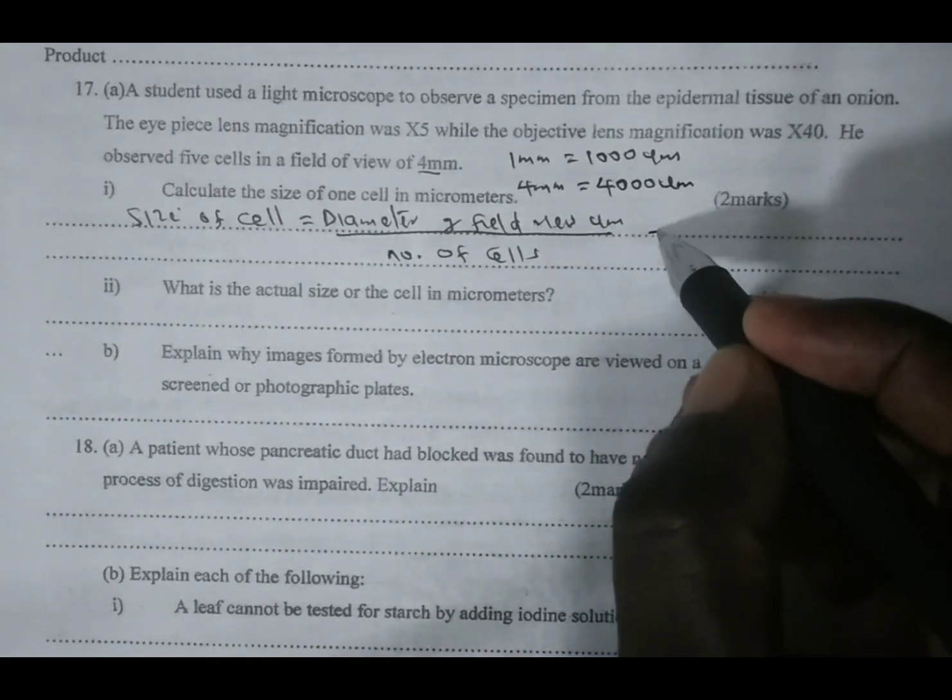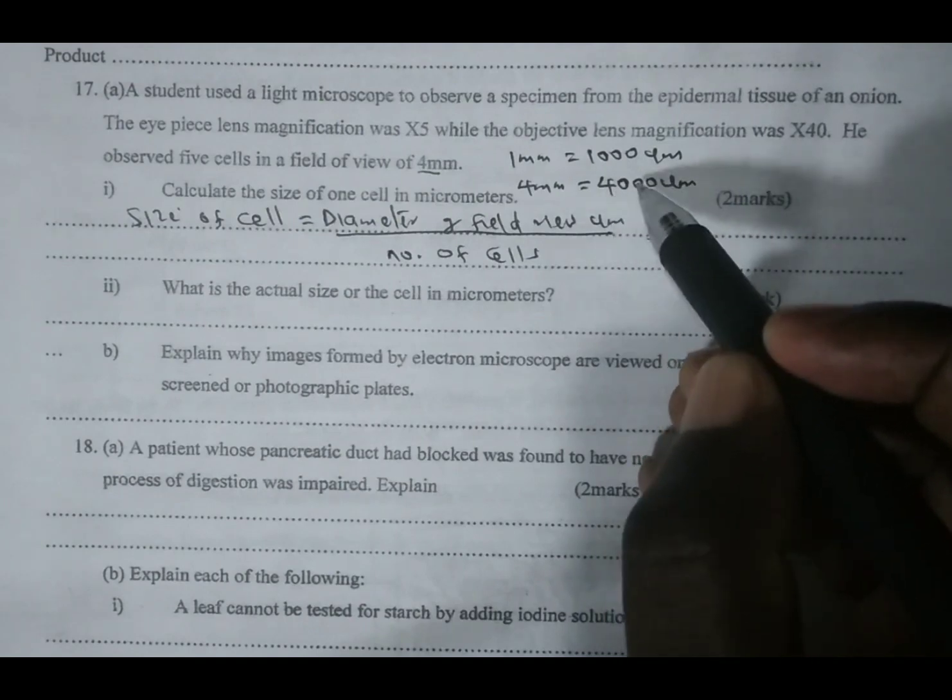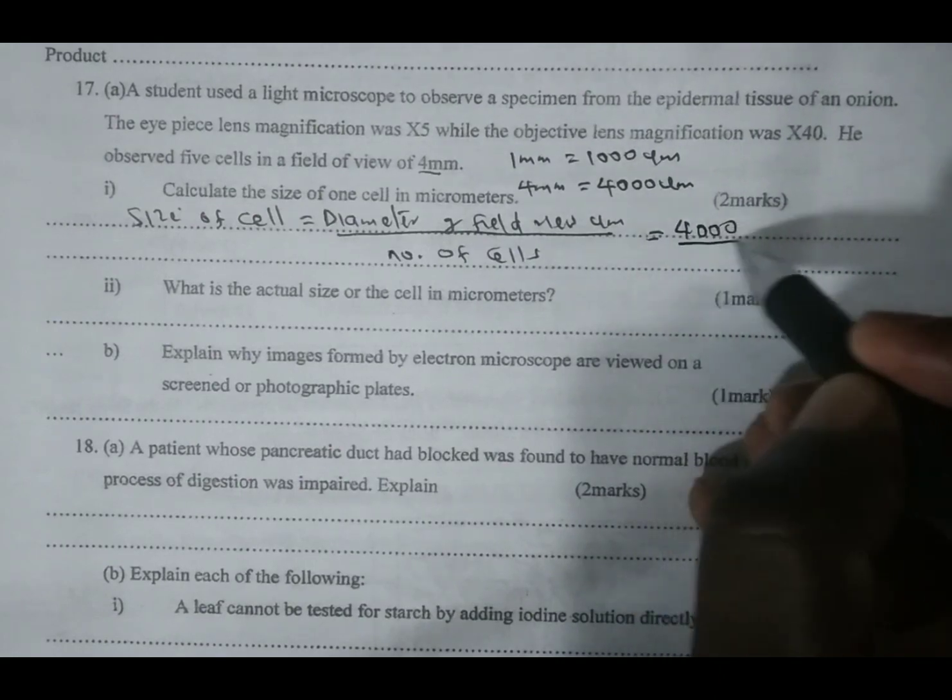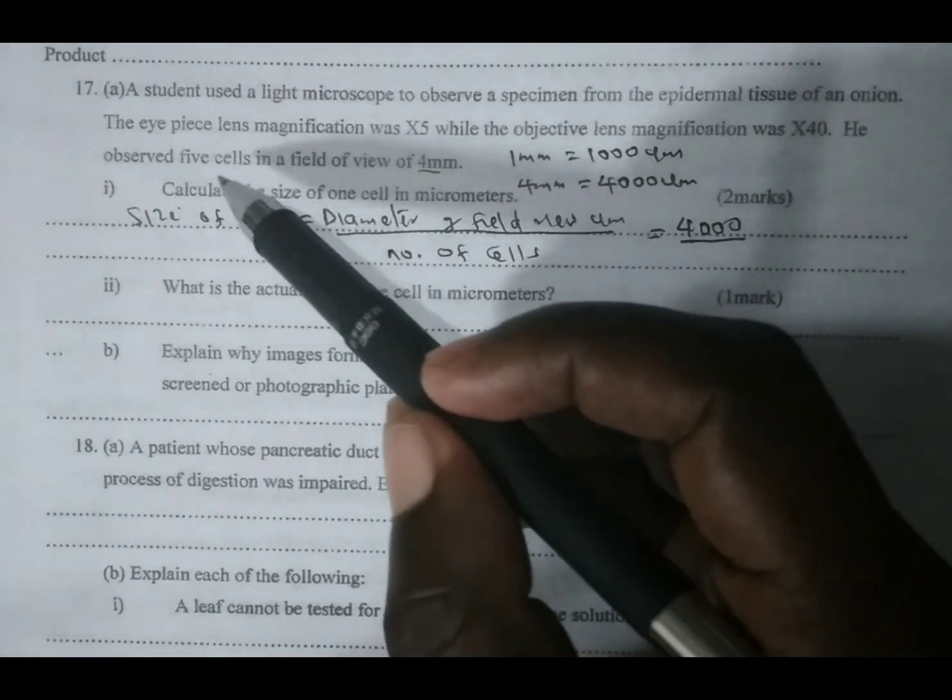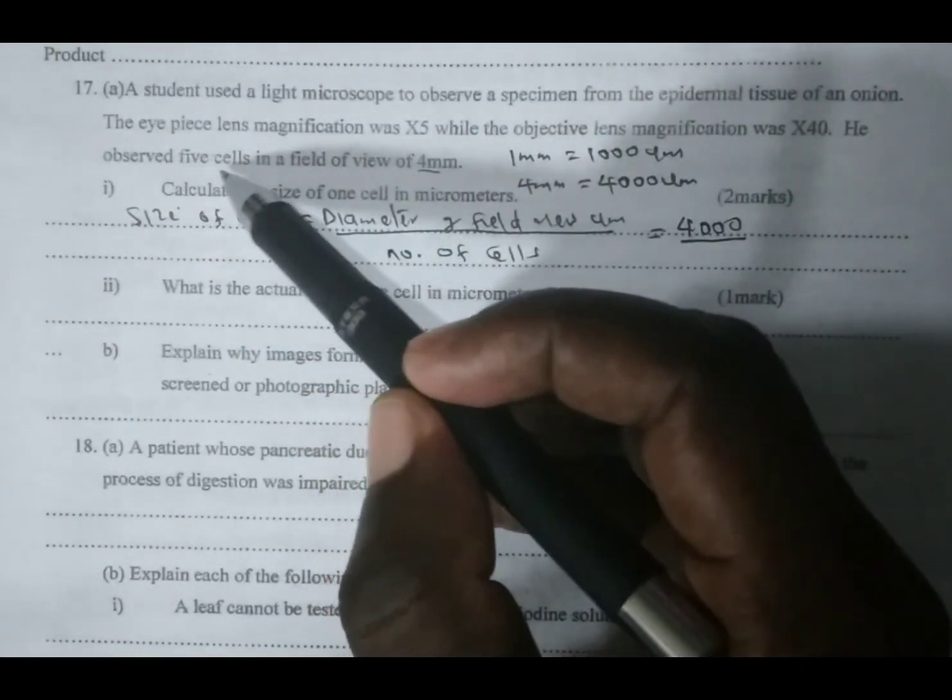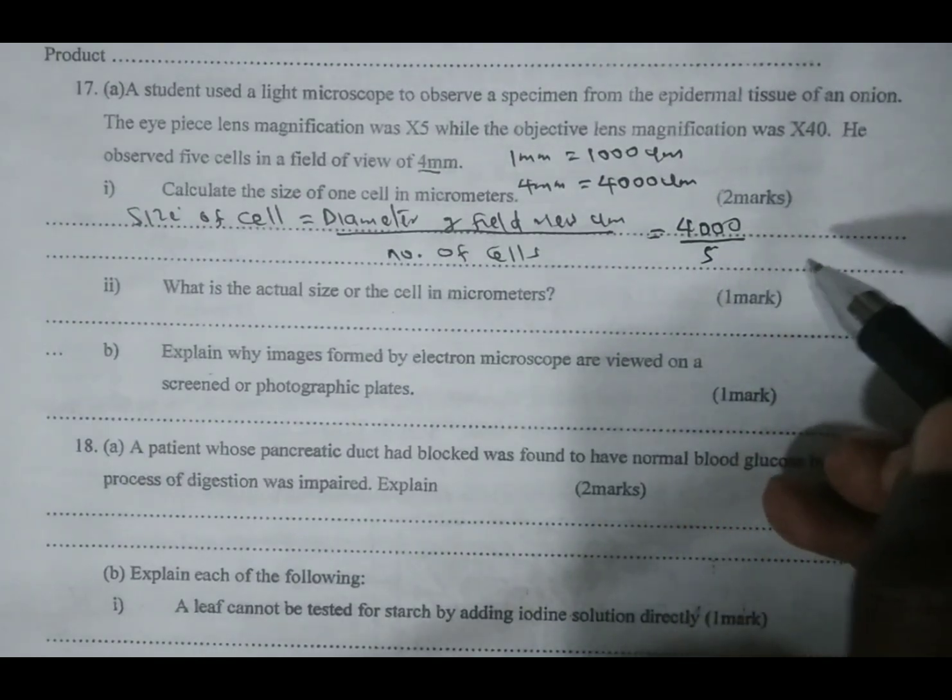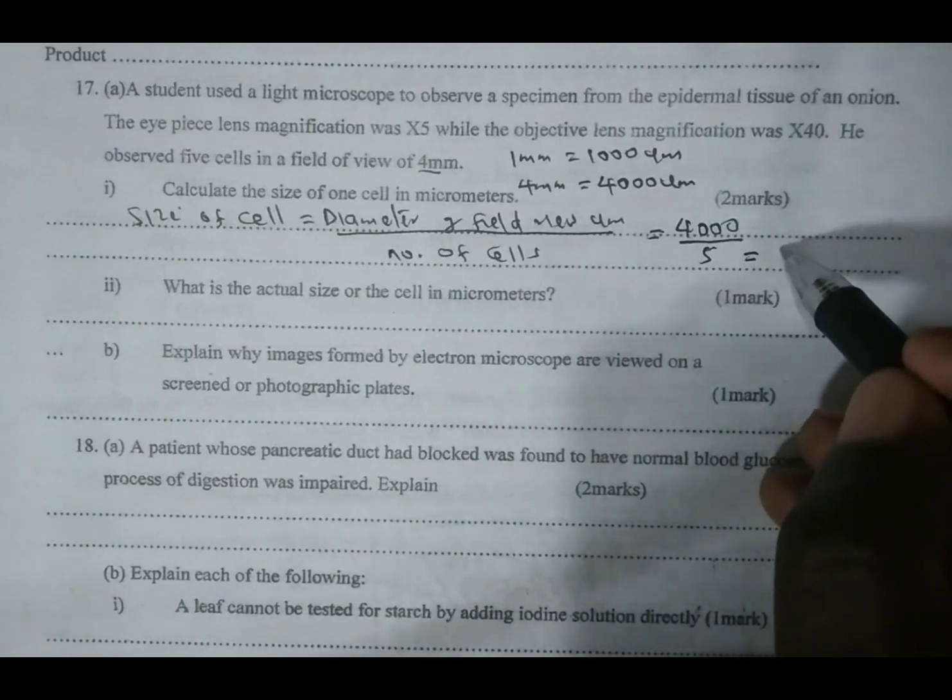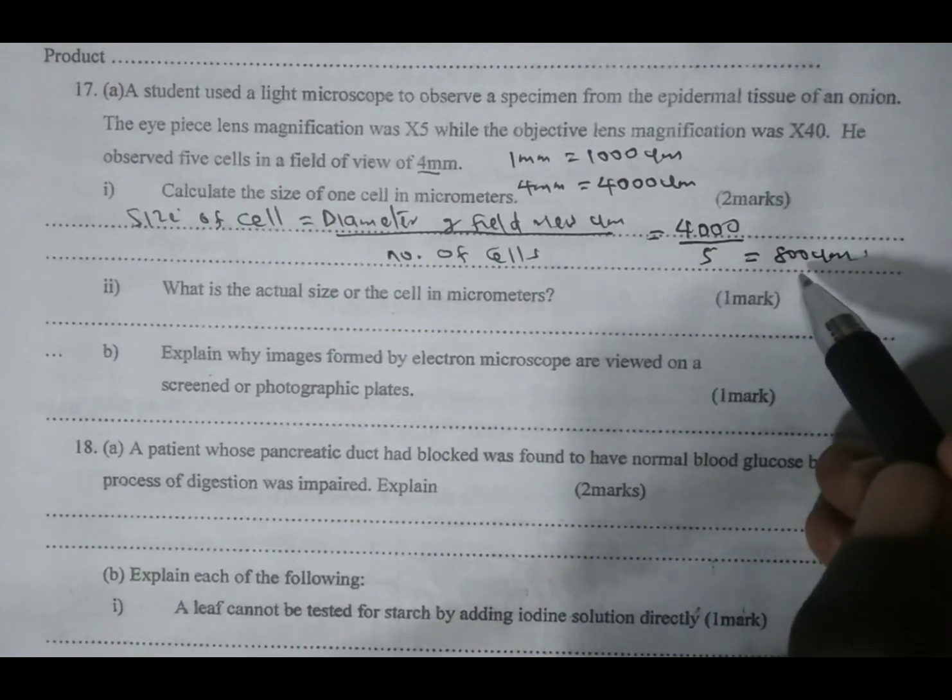In this case, to get the size of one cell, we take the diameter of field of view in micrometers, which is 4000, we divide by the number of cells observed, which is five. So if you take 4000 divided by 5, you get an answer equivalent to 800 micrometers. Remember, this is the size of the cell under magnification.